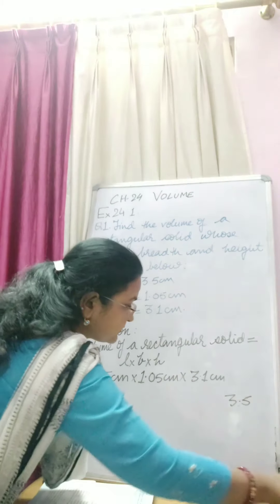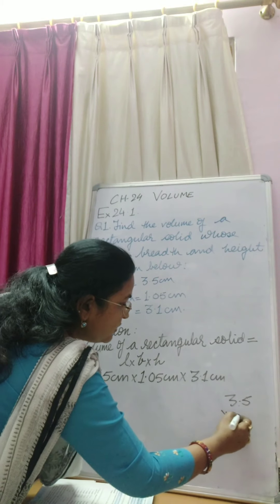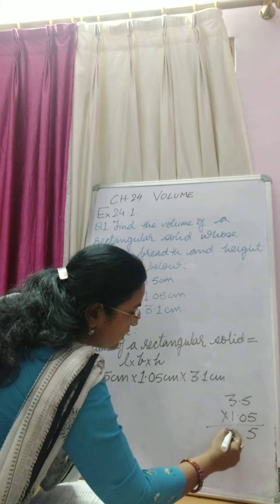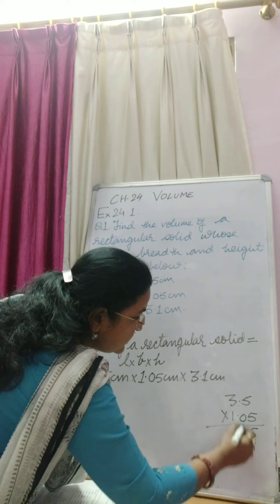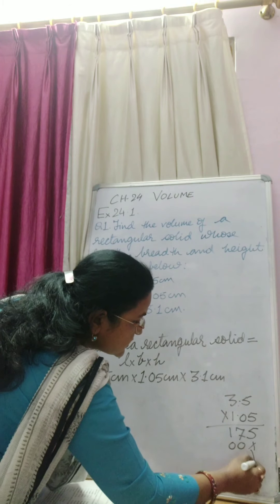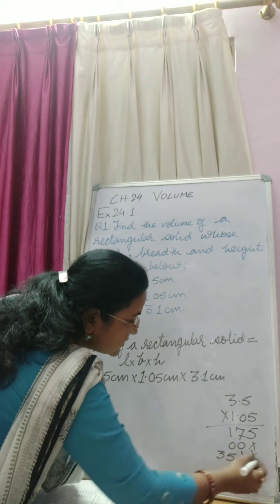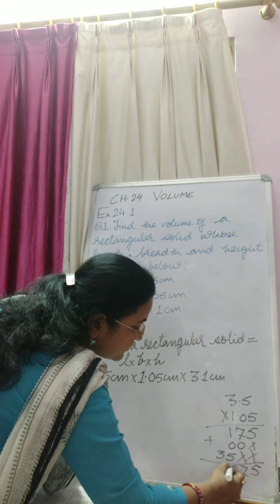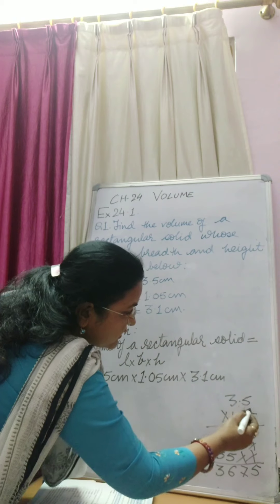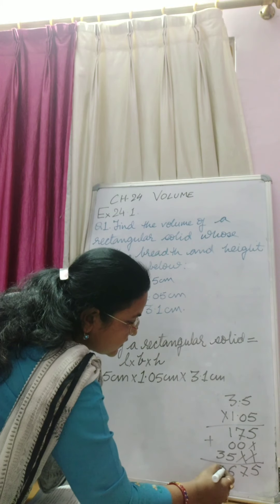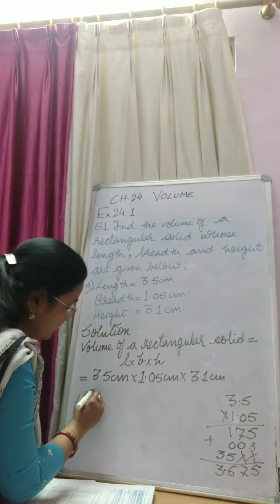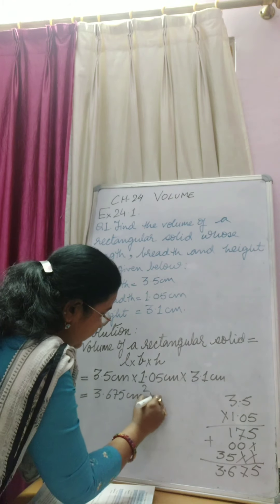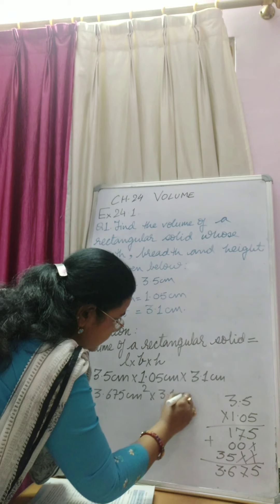3.5 cm into 1.05 cm. 5 fives are 25, carry 2. 15 plus 2, 17. 0 fives are 0, 0 threes are 0. 1 five is 5, 1 three is 3. So we get 5, 7, 6, 3. How many decimals? 1, 2, 3. So it is 3.675. So it is 3.675 cm squared into 3.1 cm.